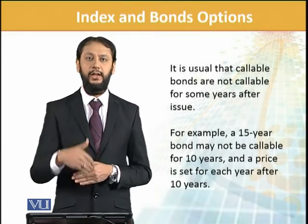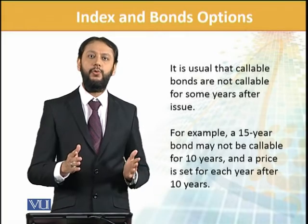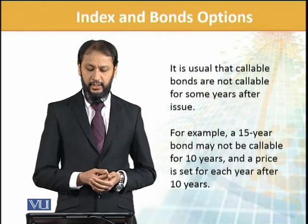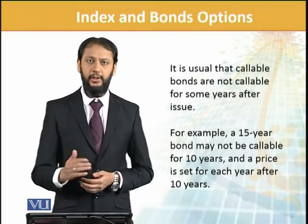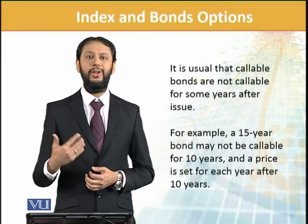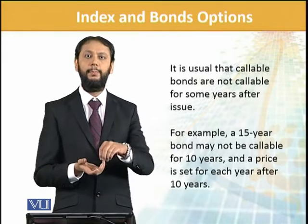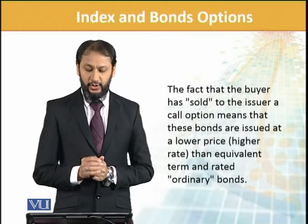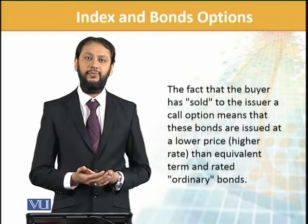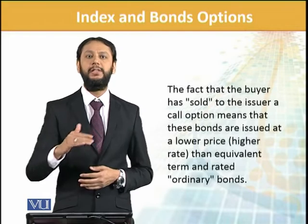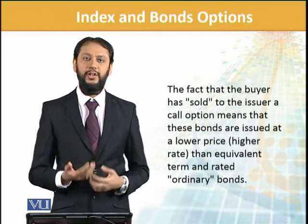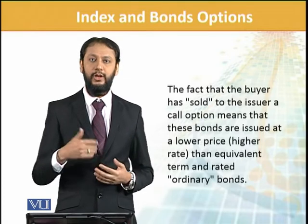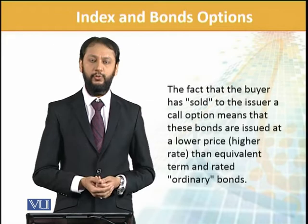The call period is set — for example, a 15-year bond may not be callable for the first 10 years, and only after that can the company call it. This is a callable bond — the option is built into the bond. Because the buyer has sold the issuer a call option, these bonds are issued at a lower price than normal bonds. The investor is at a disadvantage in this structure, so they receive a premium — the bond price is slightly lower to compensate the investor for granting this option to the issuer.